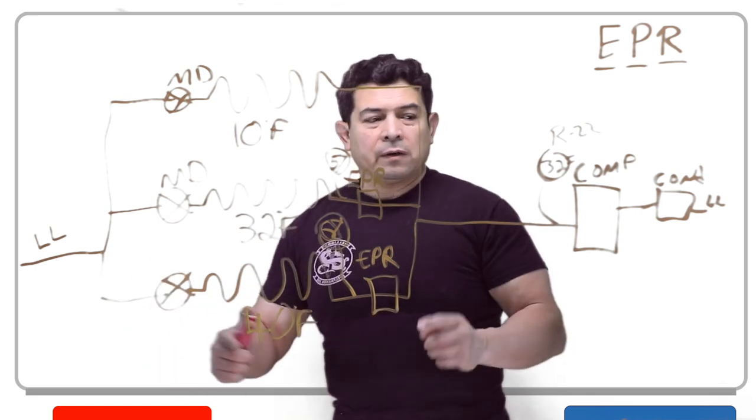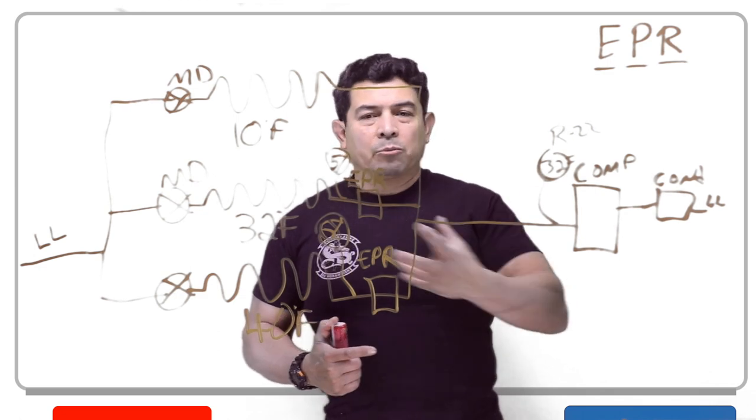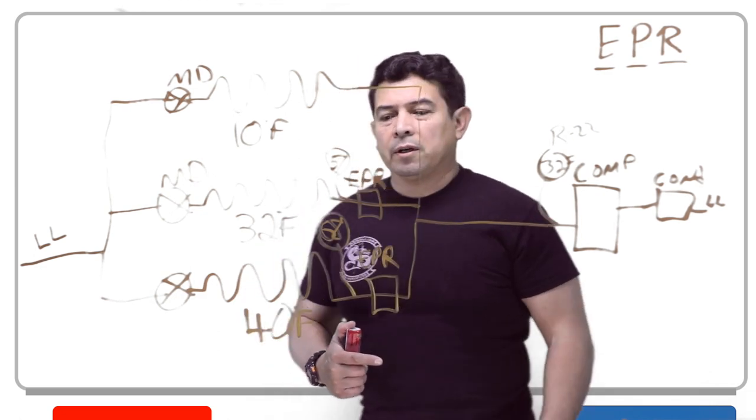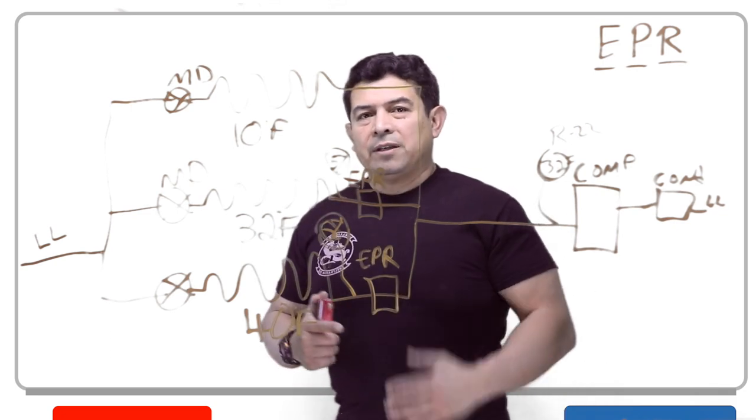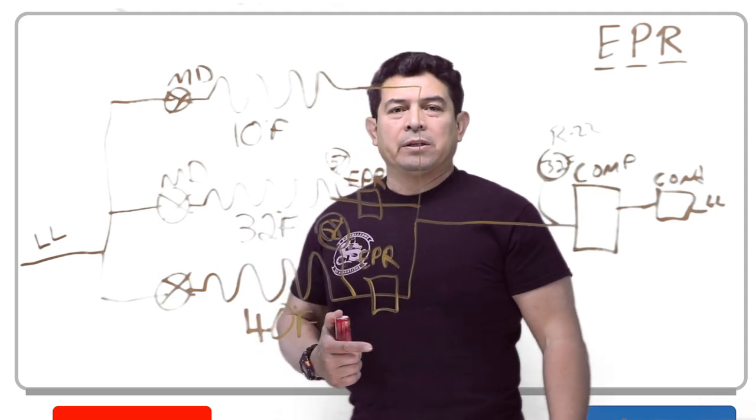We could actually add another one here as long as the compressor can handle the load. As long as this compressor can handle all that refrigerant, yes, we can keep adding more. So this is an example of how the EPR valve works, where you may see it, and how they are used.